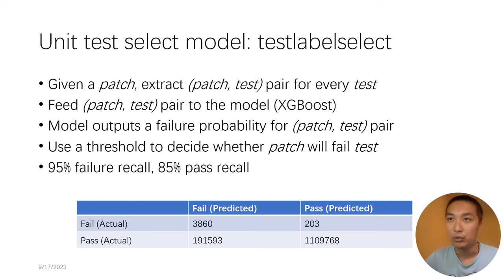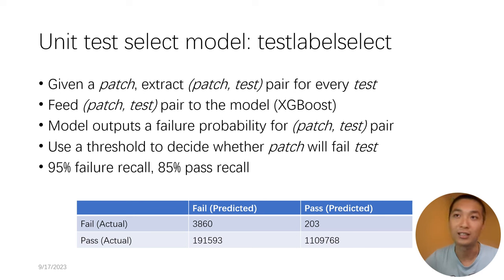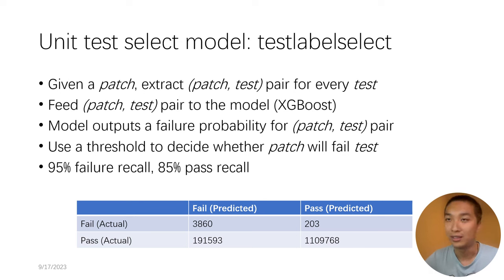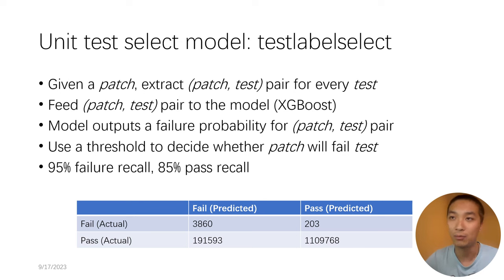However, we cannot be 100% sure about the model output. Even if it achieves 95% fail recall, there are still 5% of failing unit tests that are considered as passes. It can be a disaster if we directly merge those patches into our master branch. Therefore, a new model is needed to divide patches into high-risk and low-risk ones, using the fast-track and normal-track mechanism to save computation.